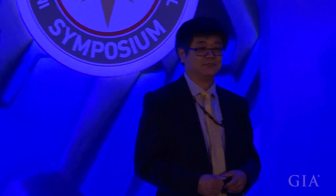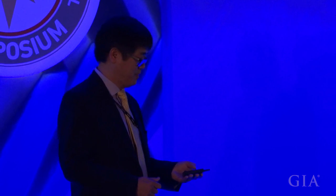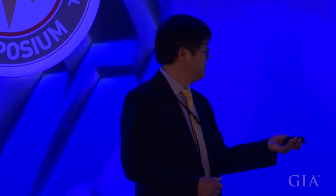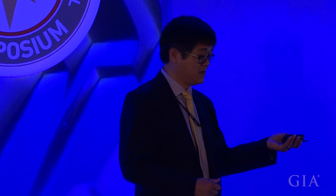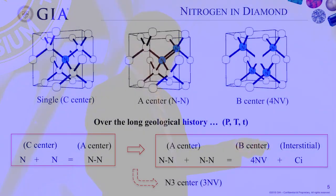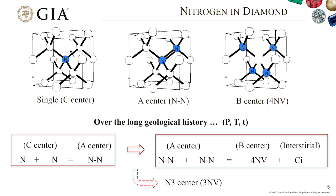Any questions? Could you please show that first chart with the A, B, C type one diagram, so I could put it all back together again? Sure.